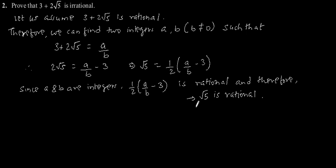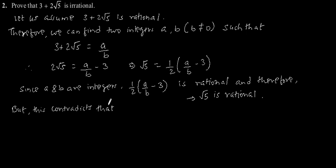But this contradicts the fact that square root of 5 is irrational. Hence, our assumption that 3 plus 2 root 5 is rational is false.